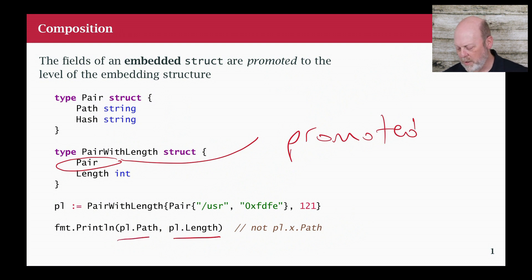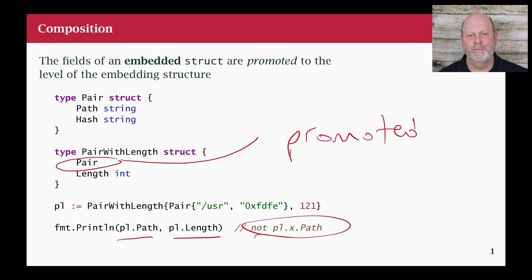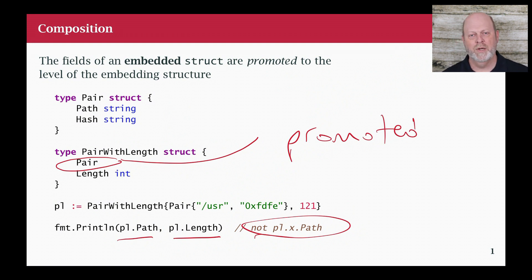But what about PL.path? In most languages, if I have a struct within a struct, I need more dot notation — I need to go X.Y.Z to get down to some field. But we don't do that in Go because the embedding causes the fields of pair to be promoted to the same level as pairWithLength. So that's part of it — that's the beginning of the story.